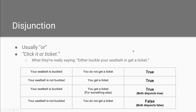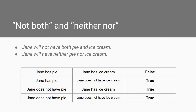This requires a lot of practice. Now consider: 'Jane will not have both pie and ice cream' and 'Jane will have neither pie nor ice cream.' Let's construct a truth table. If Jane has both pie and ice cream, it is false — because we said she will not have both. If Jane has pie but not ice cream, that's true. If Jane has ice cream but not pie, that's also true. And if Jane has neither pie nor ice cream — 'Jane will not have both' is true, and 'Jane will have neither pie nor ice cream' is also true.